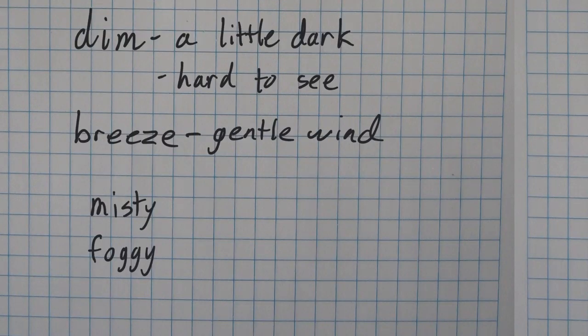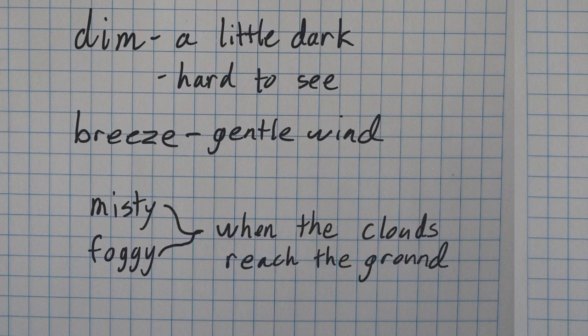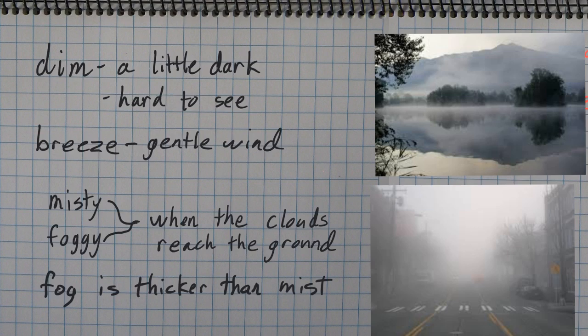And finally, we're going to define misty and foggy as, very simply, when the clouds reach the ground. But I also want you to know there is a difference. Fog is actually thicker than mist. So if you were to look at these two photos, you might call this one up here mist. It's not too thick. And down here, when it's very thick, it is fog. So they're both very similar, but there is a little difference between those two words.